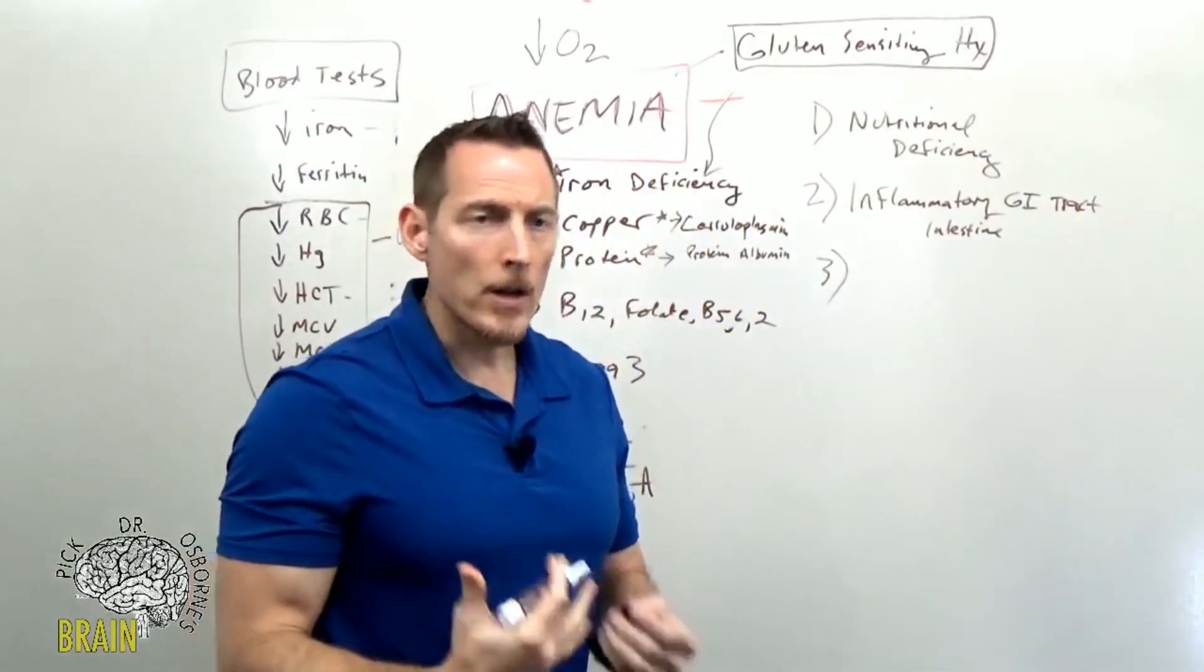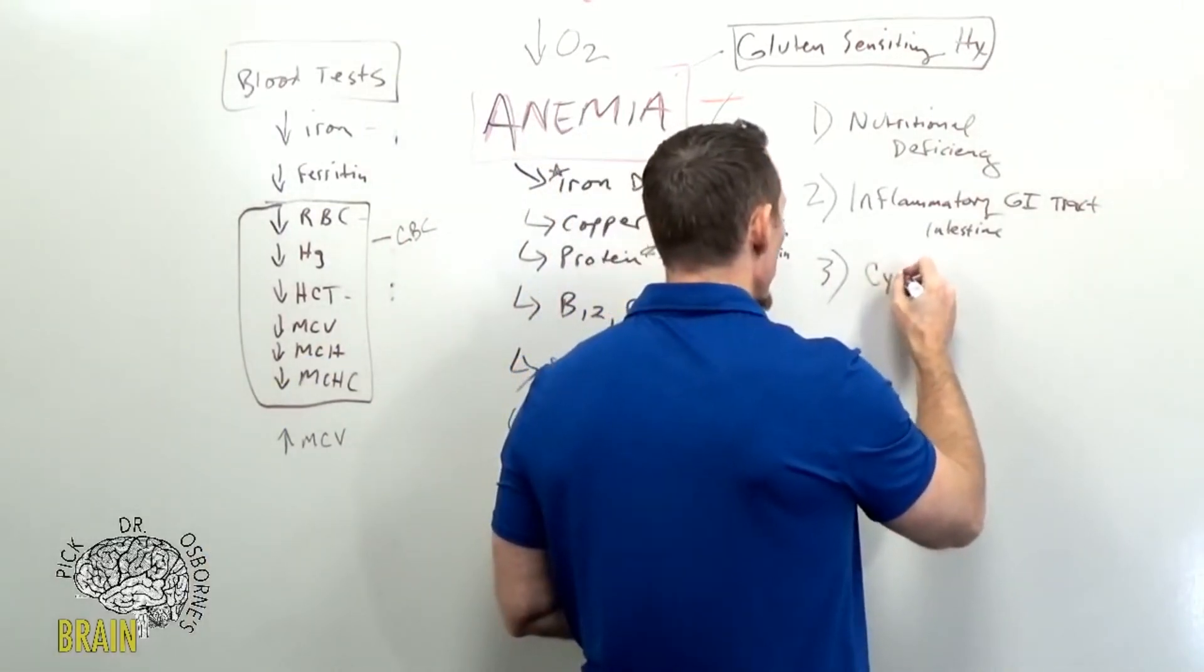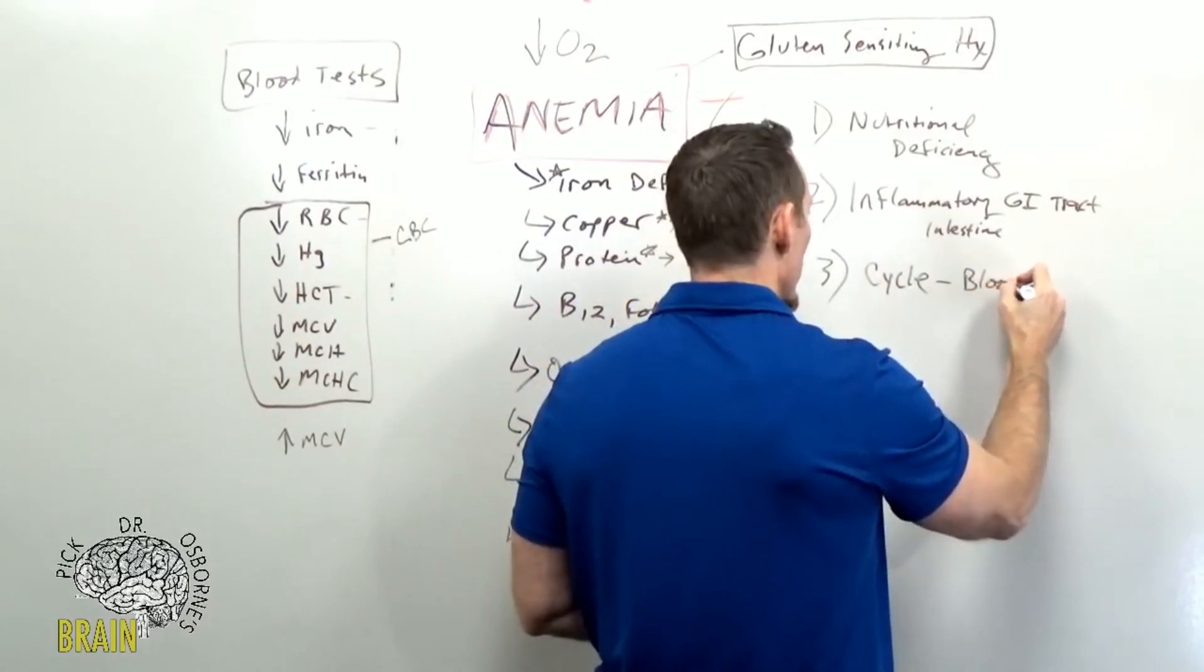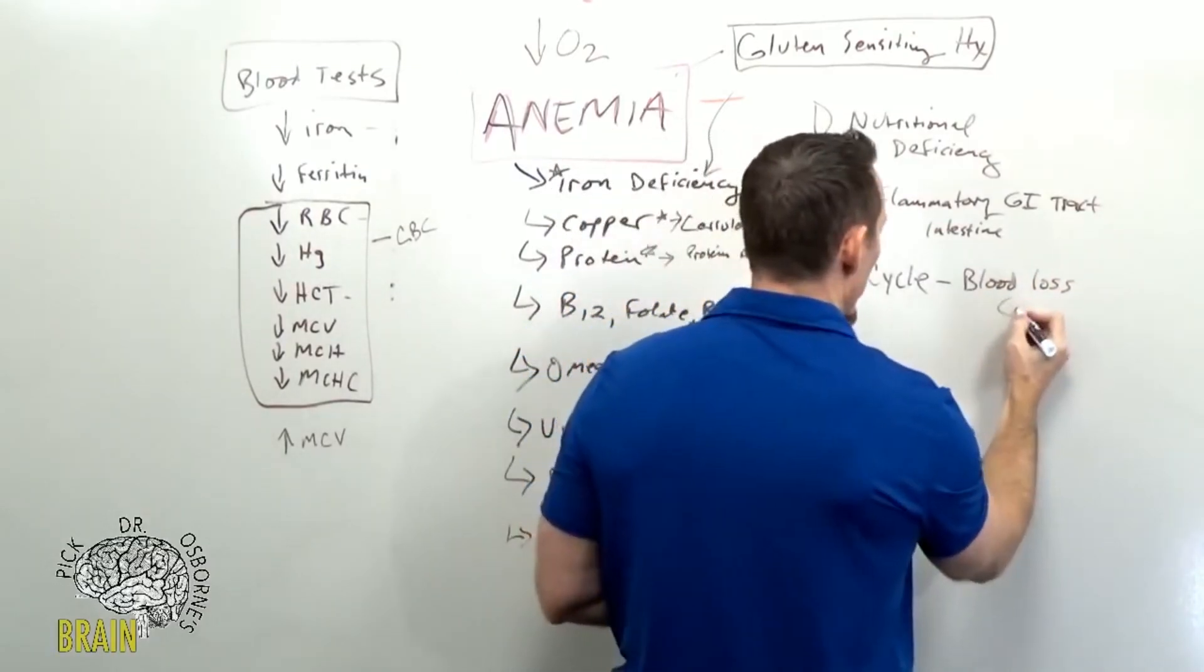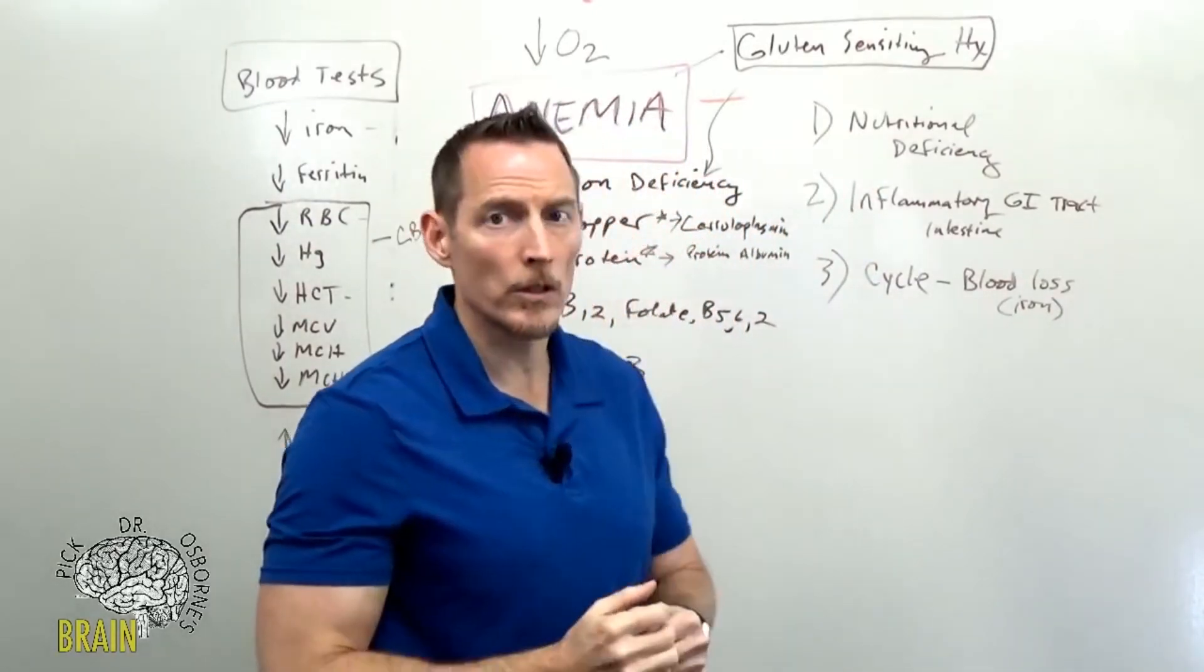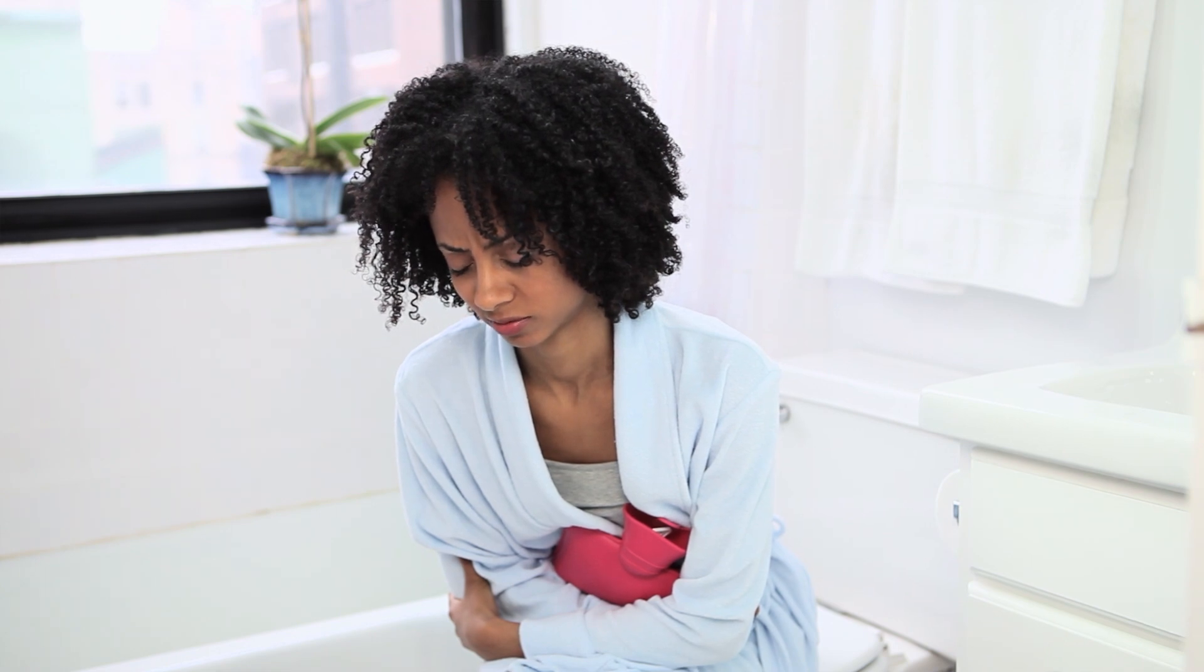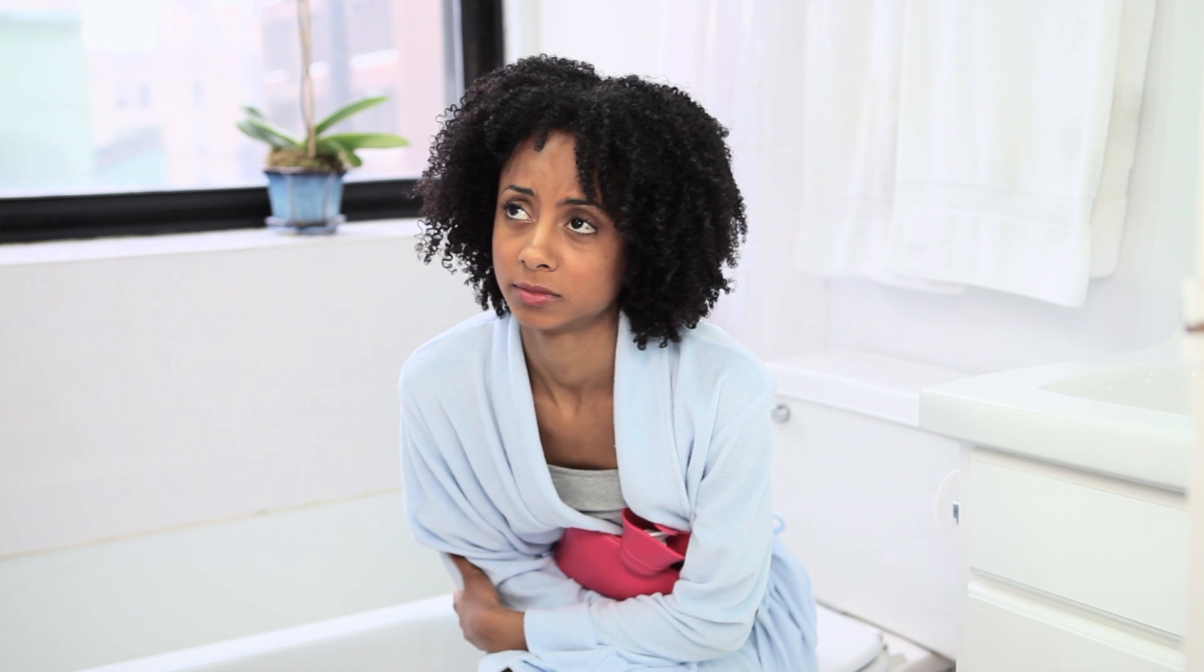Another common cause that I see in women is when you cycle. When you're going through your cycle and you have heavy cycles where there's a lot of blood loss, remember when you lose blood you lose a lot of iron. This is a very common cause of iron deficiency anemia is heavy bleeding or heavy blood loss during cycles. We see a lot of women develop transient iron deficiency anemia over a heavy cycle.